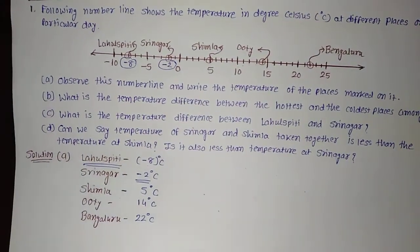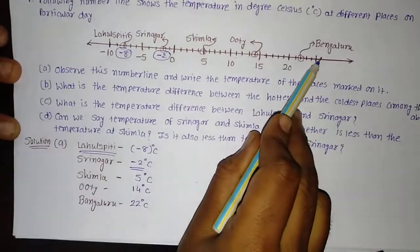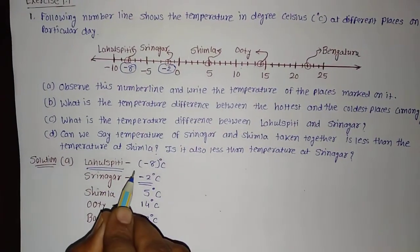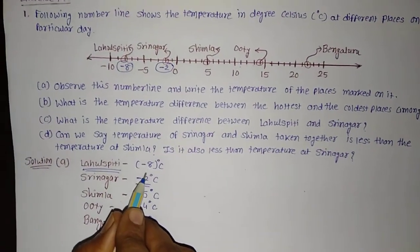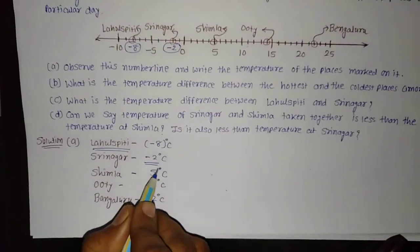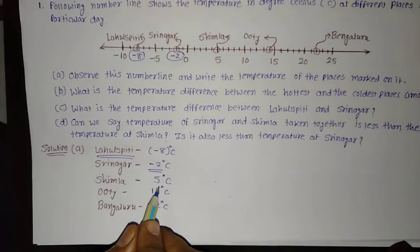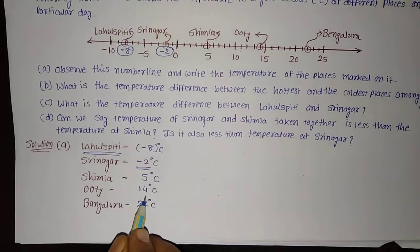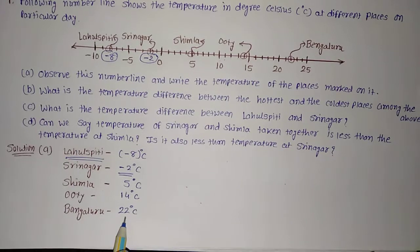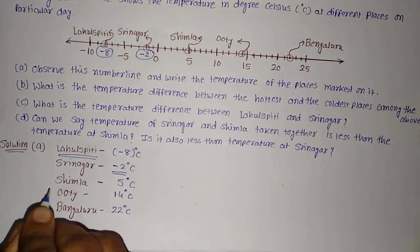So all 5 places — Lahulspiti, Srinagar, Shimla, Uti, and Bengaluru — the temperatures are: Lahulspiti is minus 8 degree Celsius, Srinagar is minus 2 degree Celsius, Shimla is plus 5 degree Celsius, Uti is 14 degree Celsius, and Bengaluru is 22 degree Celsius. This is what we have solved for Part A.